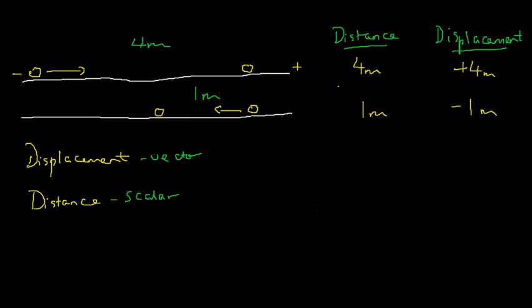Now what is slightly more tricky is when we think about the overall distance and displacement. Overall means from the start to the end. The ball moves right, then moves backwards by 1 meter. The overall distance moved is simply 4 plus 1, which is 5 meters.